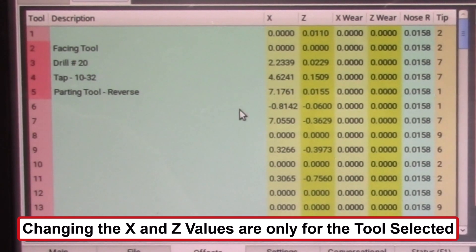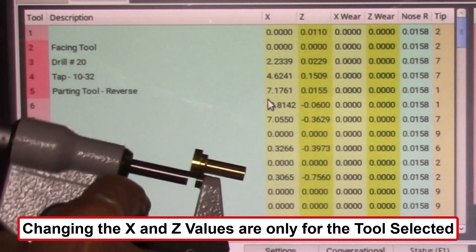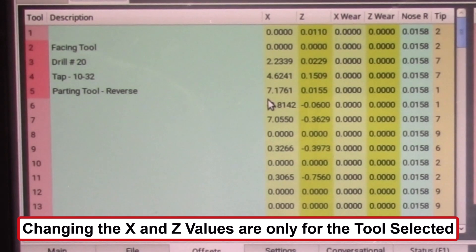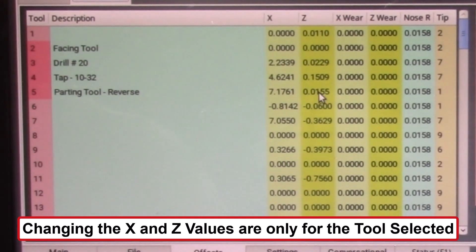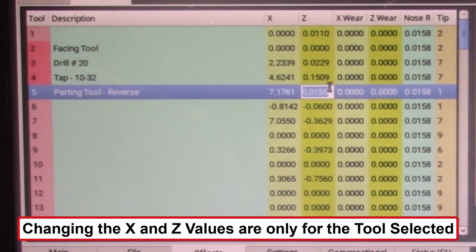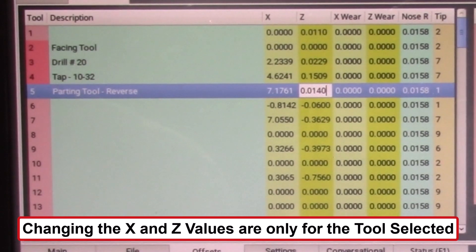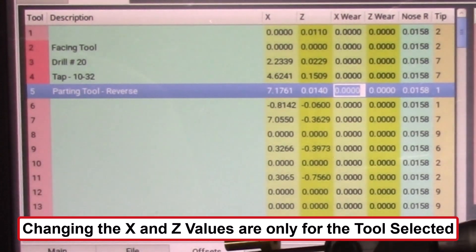I want to reduce that length by a thousandth and a half inch. So all I need to do there is go to the Z dimension in my table here and reduce that value. Instead of making it 0.155, I'm going to make it a thousand and a half less, make it 0.1535. And that will change that dimension and next time I machine this part it will be a thousandth and a half less in the thickness.